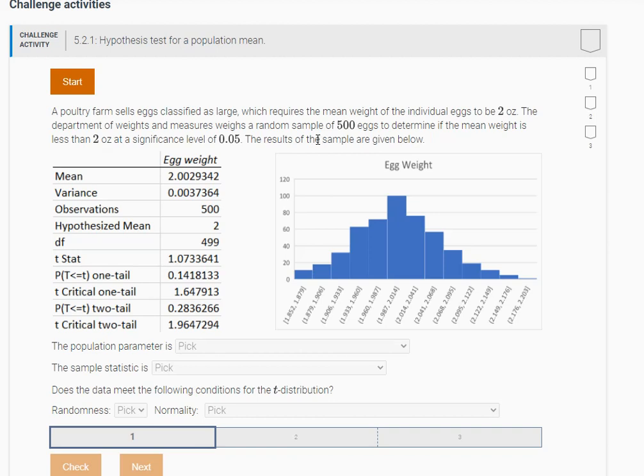At a significance level of 0.05, the results are shown below. So what you have here is some summary statistics and then some t-stats and some p-values. You see how it says t-stat and then p-value for a one-tailed test and a p-value for a two-tailed test. They also give the corresponding critical values. And you have a histogram of the weights of the sample.